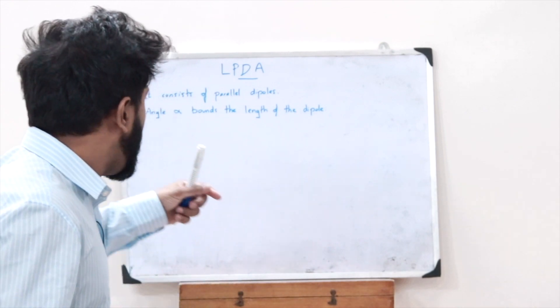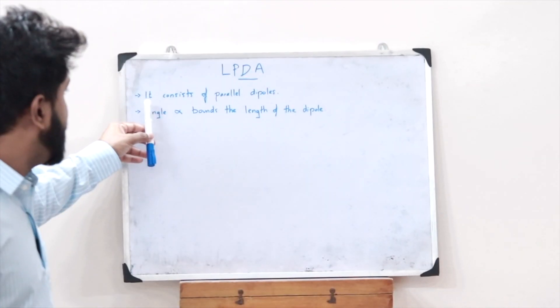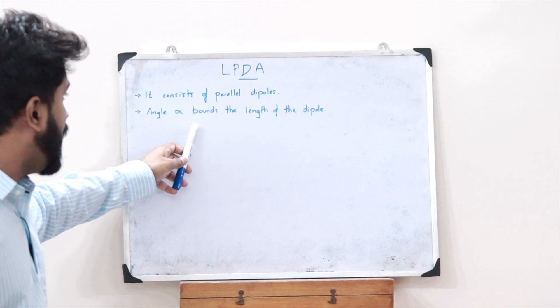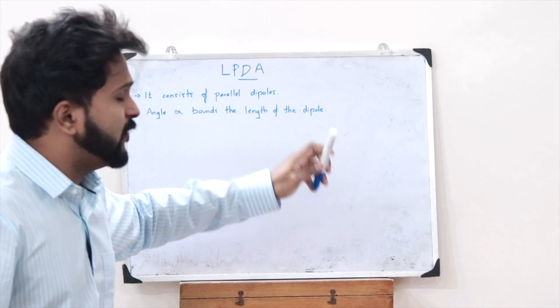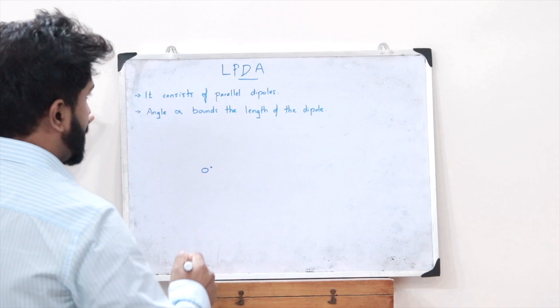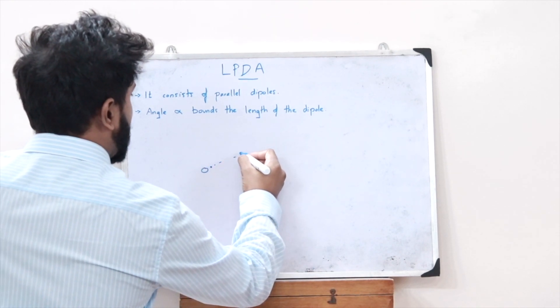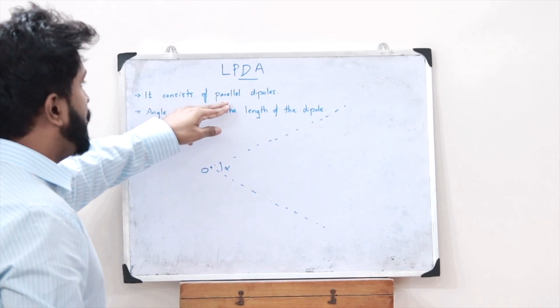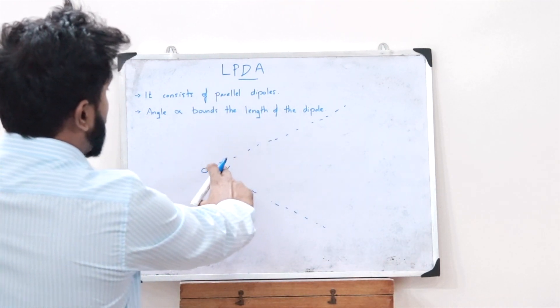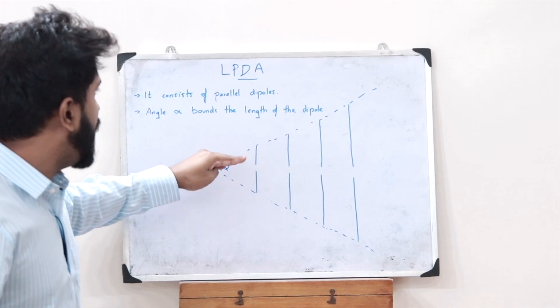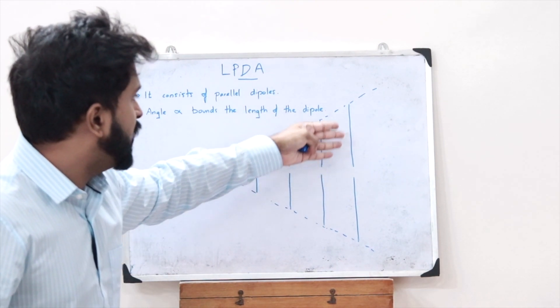The structure of a log periodic dipole array consists of parallel dipoles, and an angle alpha bounds the lengths of these dipoles. Taking a particular origin point O, with angle alpha defined from that origin, the log periodic dipole array consists of parallel dipoles bounded by this angle alpha.